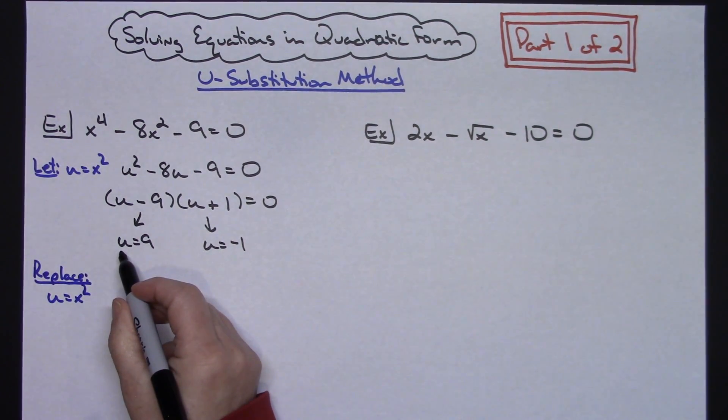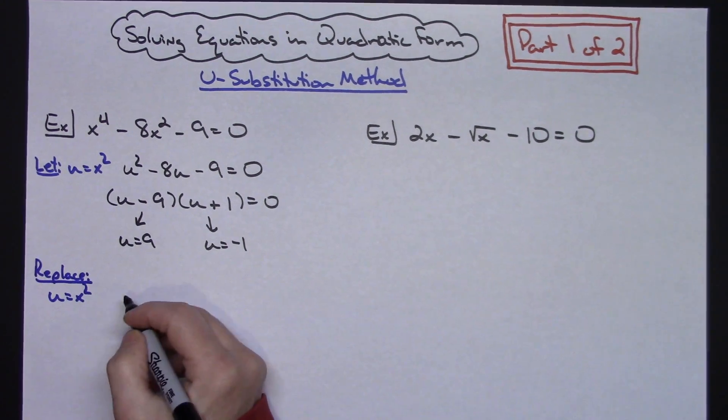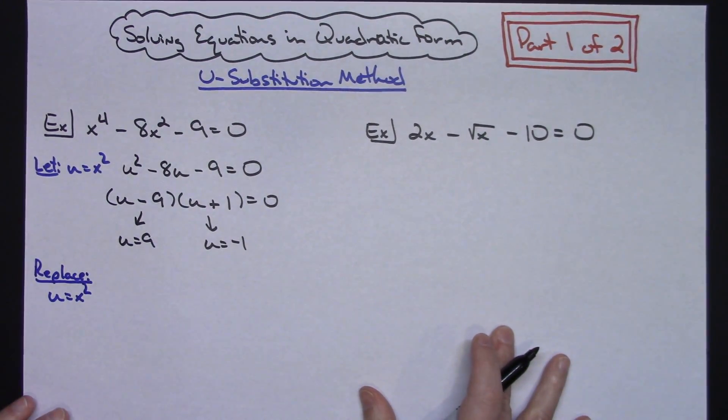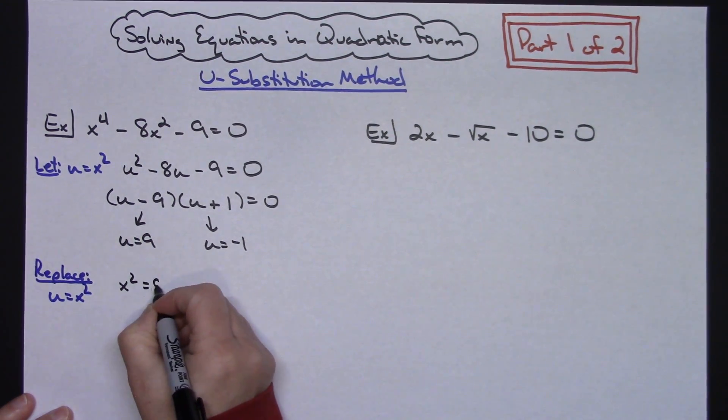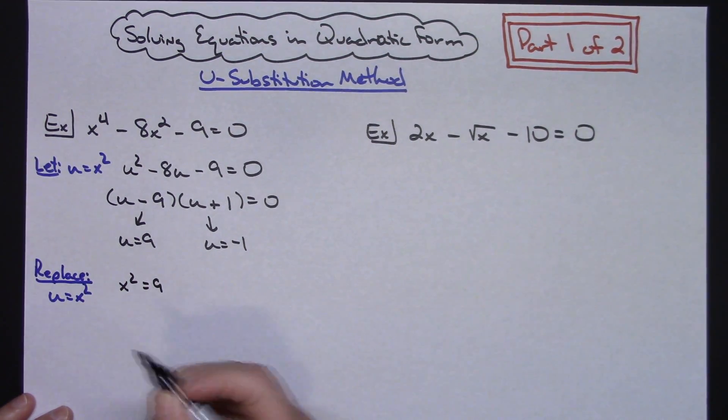Let's replace u = x^2. So in other words, that u I'm going to replace back with my x^2, so that I'm actually working with an equation in terms of x. So then I'd have x^2 = 9. We can solve that real easily by taking the square root of both sides. So x = ±√9, which is 3.